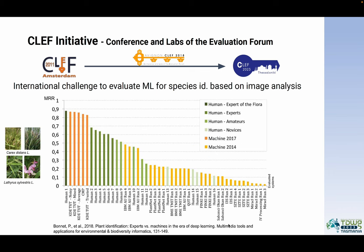Also in 2018, we were able to compare the expertise of human botanists with some of the best methods that were tested during that year's challenge. As you can see in orange, all the methods that were evaluated were very close to some of the best experts who participated. So more than six years ago already, deep learning methods were quite close to human expertise for plant species identification based on image analysis.